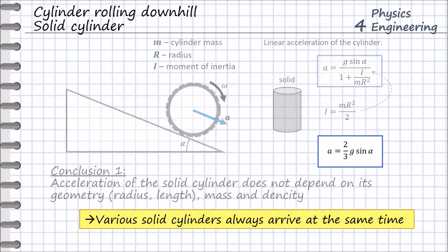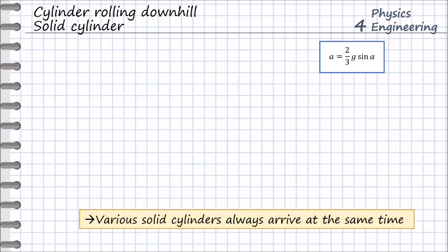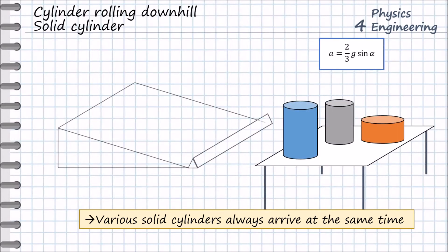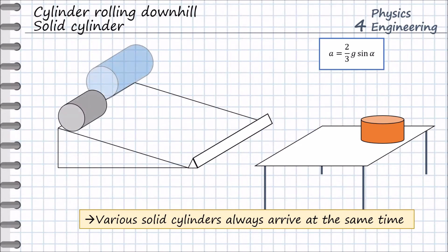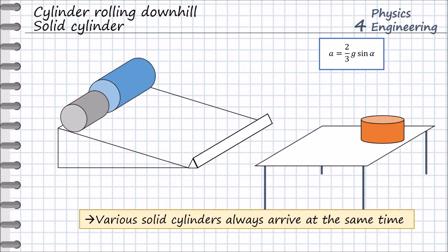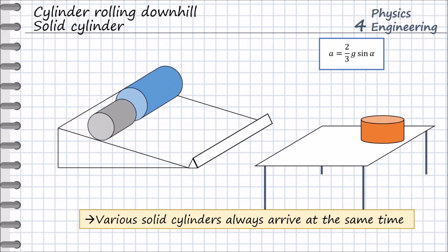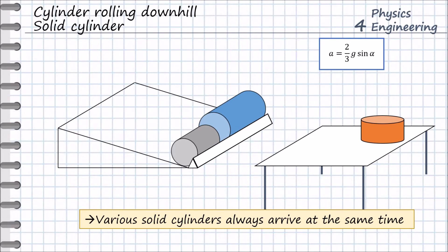Let us now do a small test. Let us take several solid cylinders and put them on the inclined plane. We take a blue and gray cylinder with different lengths, radius, and mass, and let the cylinders run at the same time. As we see, both cylinders arrive at the same time. These two cylinders arrive at the same time, which confirms our conclusion that various solid cylinders always arrive at the same time, independent of their geometry and mass properties.